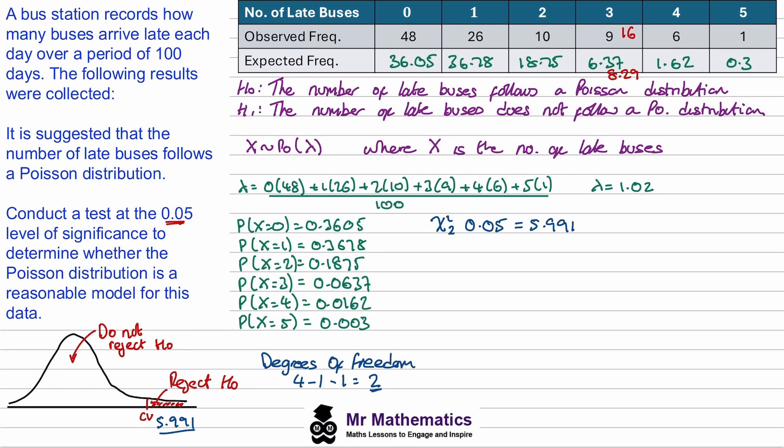Now we've got our critical value. We need to find our test statistic. If it falls to the right of the critical value, we know to reject H0. And if it falls to the left, we know we don't reject H0 because we'll be in this region. But to work out our test statistic, this will be the sum of the square of the observed minus the expected values over the expected value. And we can calculate this from a table.